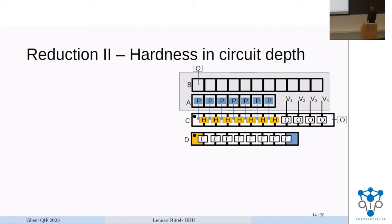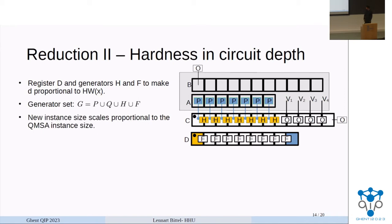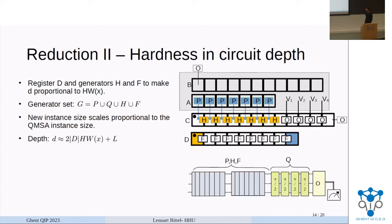So why does this work? The reason is basically if we think about completeness, we apply P whenever the proof string is one, and then perform all other Q gates in order, which implements the circuit. This total depth now for this construction is the Hamming weight of X plus the depth of the QMSA circuit. And soundness we can basically enforce through this clock register construction that the VQA can't really cheat in any meaningful fashion. Now this is not enough. We actually need to change a few more things. This means we have to add the register D here, as well as two more generators. The sole reason we are doing this is basically to make the depth of the VQA be proportional to the Hamming weight of the proof.